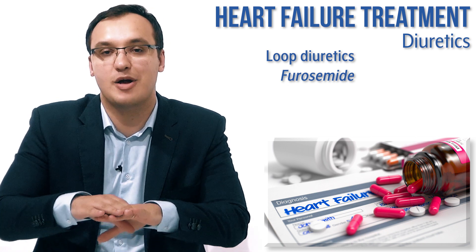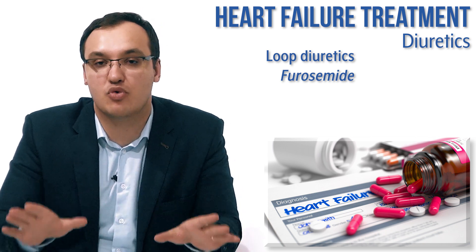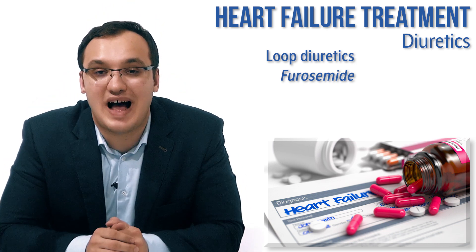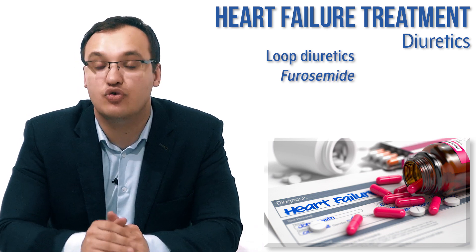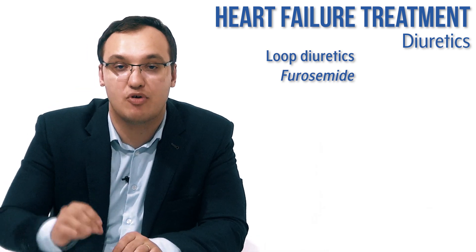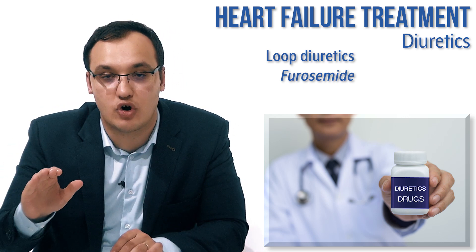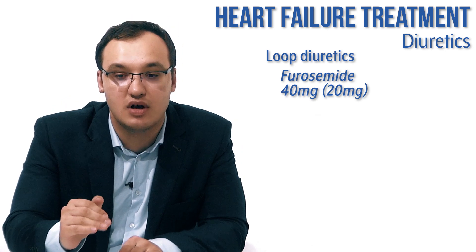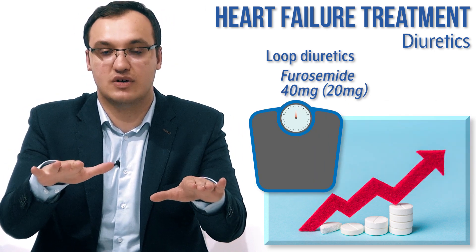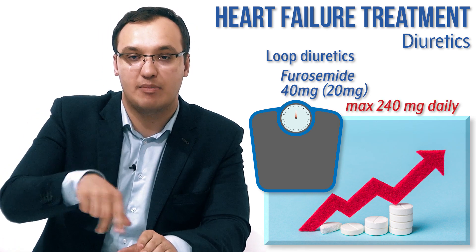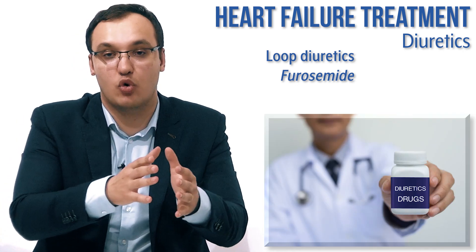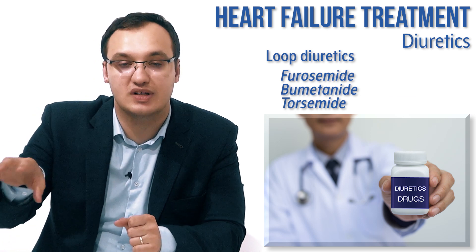There is a lot more information about furosemide and diuretics, but in these videos I am trying to give the most high-yield, most important information. The most important things to remember: furosemide is a loop diuretic used for all patients with heart failure. 40mg or 20mg is the initial dose, then you increase it weekly. You reach the target dose when the patient's weight is balanced. The maximum daily dose is 250mg - 120mg twice a day. We also have other loop diuretics: bumetanide and torsemide, which have different doses.